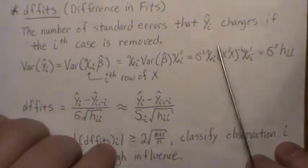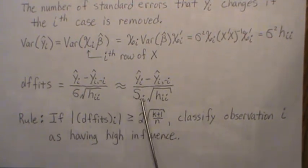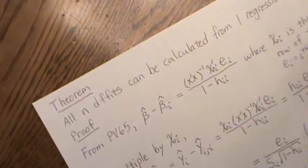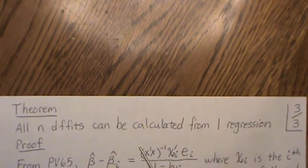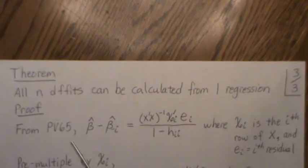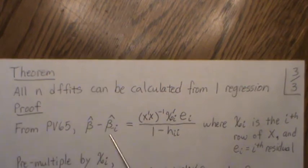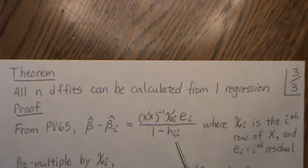What I find mind-boggling is that while this fitted value is calculated from all observations and this one requires removing the i-th observation, the next theorem tells us we don't need to run separate regressions for each observation. All DFFITS values can be calculated from one regression fit. From previous video 65, we showed the relationship: beta-hat equals beta-hat_(i) plus [X'X]⁻¹ x_i e_i / (1 - h_ii), where e_i is the residual and h_ii is the i-th hat value diagonal.